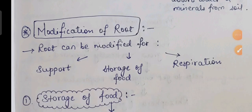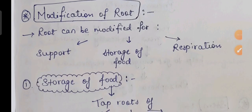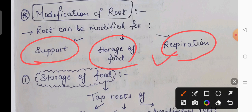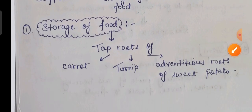The next topic is modification of roots. Beyond the main function of water and mineral absorption, roots can be modified to perform additional functions: they can provide support, store food, and help in respiration. The root can be modified for support, storage of food, as well as respiration. Let us discuss each of these one by one.